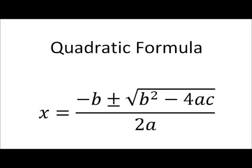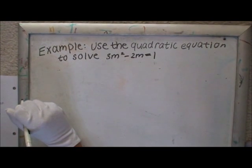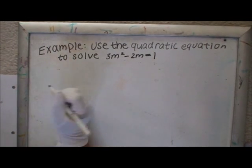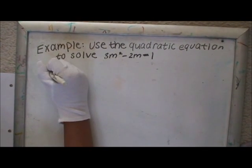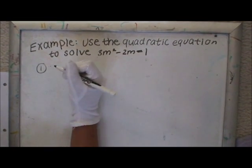Here, I'll do the first one for you. The example is, use the quadratic equation to solve 3M squared minus 2M equals 1. The first step is to make it into AX squared plus BX plus C equals 0 form.